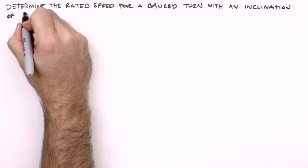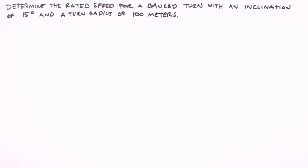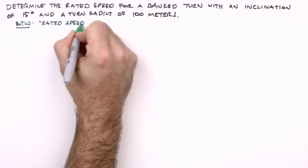Here we're given both the inclination and the radius of the turn. Armed with these two pieces of information, and a little physics, we're going to determine the rated speed for this turn.